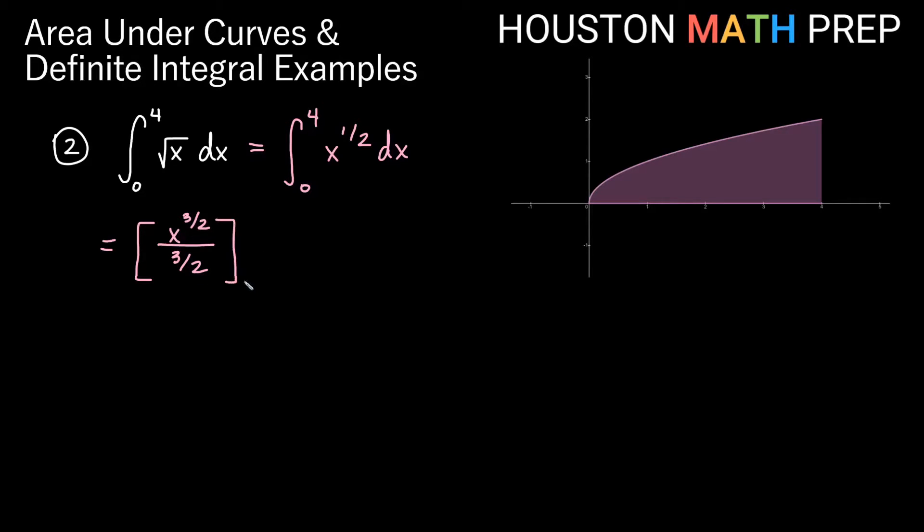And we'll evaluate on the interval 0 to 4. Now divide by 3 halves. A fraction in a fraction is not so good. So I'm going to go ahead and bump that out and call it multiply by the reciprocal. So we're going to say 2 thirds x to the 3 halves. And we'll evaluate that from 0 to 4. I could go ahead and bump my 2 thirds out if I want. Maybe I'll go ahead and do that. Let's say 2 thirds times that would give me 4 to the 3 halves minus 0 to the 3 halves.